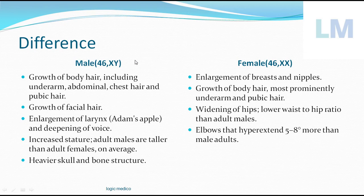At puberty in males, there is growth of body hair including the upper arm, abdominal region, chest area, and pubic area, as well as growth of facial hair — beard and moustache. Enlargement of the larynx occurs, forming the Adam's apple, causing deepening of the voice. There is increased stature, so the ultimate height attained by males is slightly higher than females, along with heavier skull and bone structure and greater muscularity of the body. These are all secondary sexual characteristics of males.